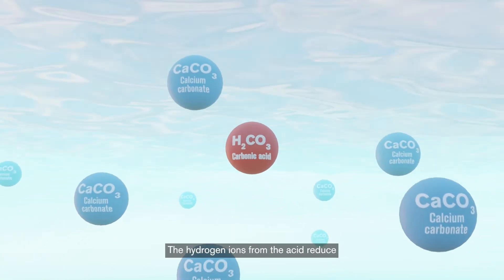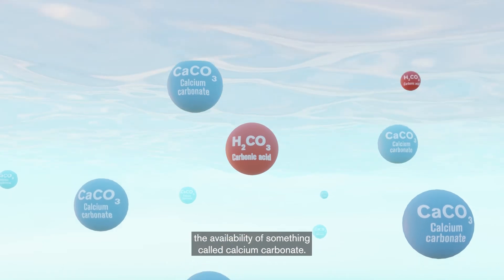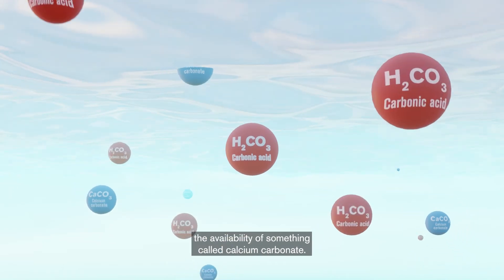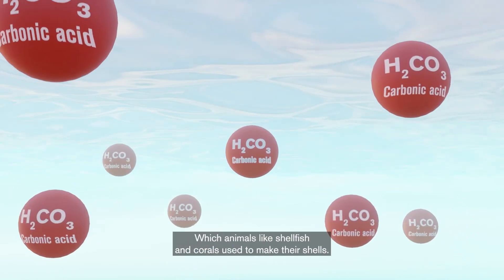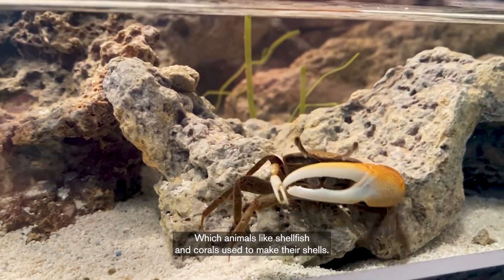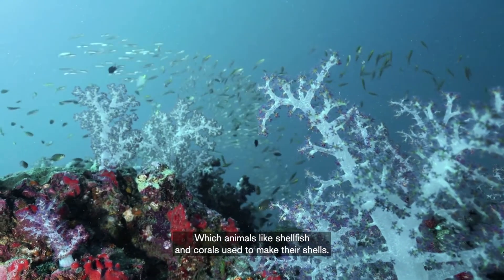The hydrogen ions from the acid reduce the availability of something called calcium carbonate, which animals like shellfish and corals use to make their shells.